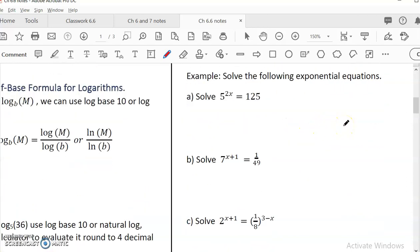The first is 5 to the 2x equal to 125. So think of, first of all, we always think of, can I write this as the same base? Can I write 125 as the base of 5? Yes, we know that this is actually 5 cubed. So I would rewrite the equation of 5 to the power 2x is 5 cubed. And if they're the same base, I can cancel it. 2x equal to 3. So x equal to 3 over 2. So that is the answer.